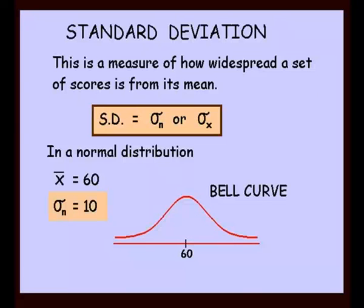Third and final result: consider the standard deviation of 10. This time jump up three lots of 10 — that would take us up to a score of 90. If we go down three lots of 10 we'd be down to 30. Our final result is that 99.7% of students scored between 30 and 90 — nearly the whole population.